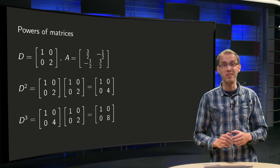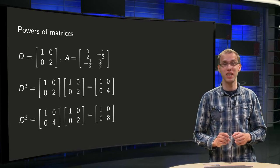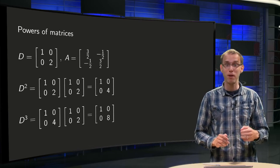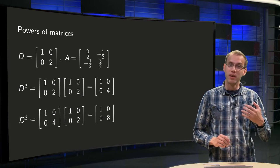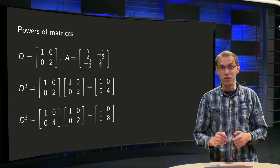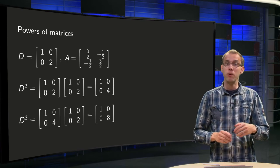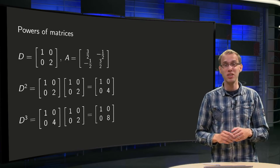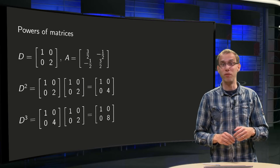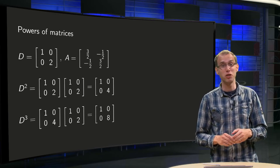If you can find the so-called diagonalization of a matrix A, computing high powers of A becomes a lot easier. That is nice for basic computation exercises, something like compute A to the power 10, but we will need this kind of computation a lot later on when we encounter, for example, discrete dynamical systems.